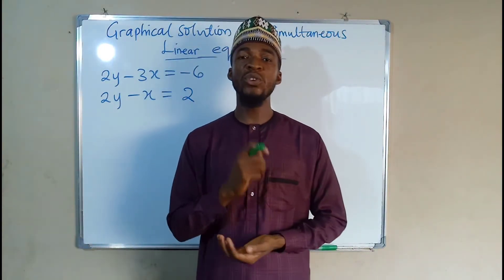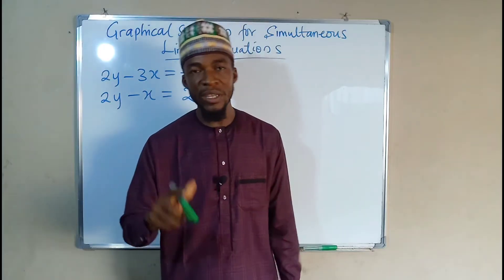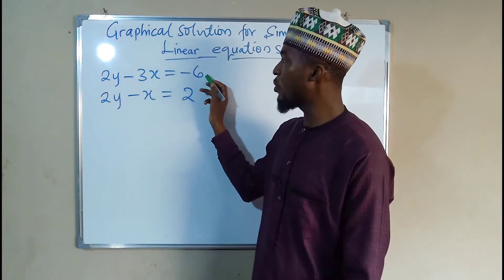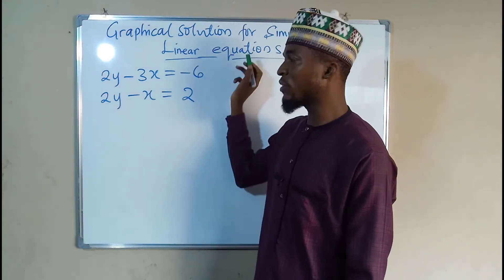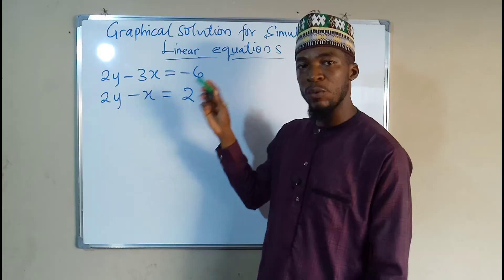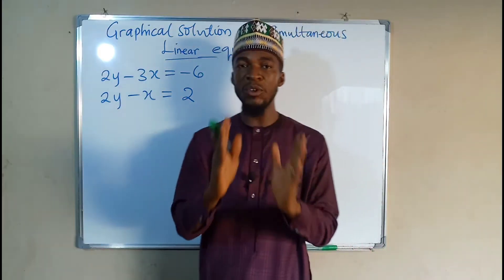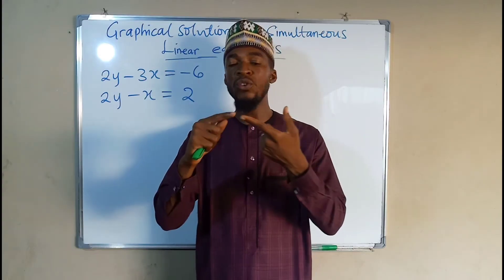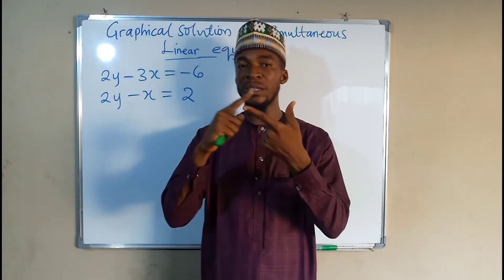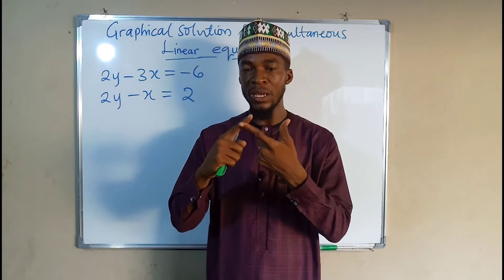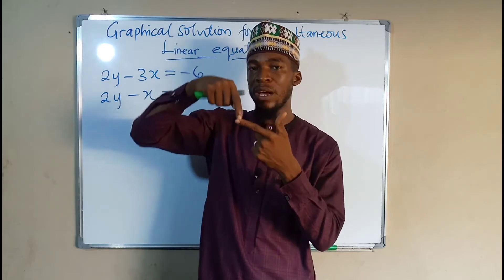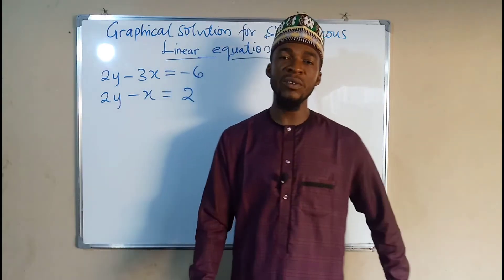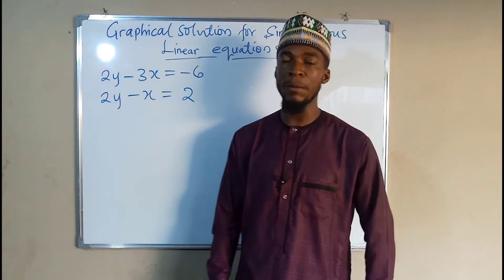So to find the solution for simultaneous linear equations, first of all we are going to graph the first equation, then graph the second equation on the same graph. The point at which the two graphs intersect — the coordinate at that point — will determine the solution for these simultaneous linear equations.